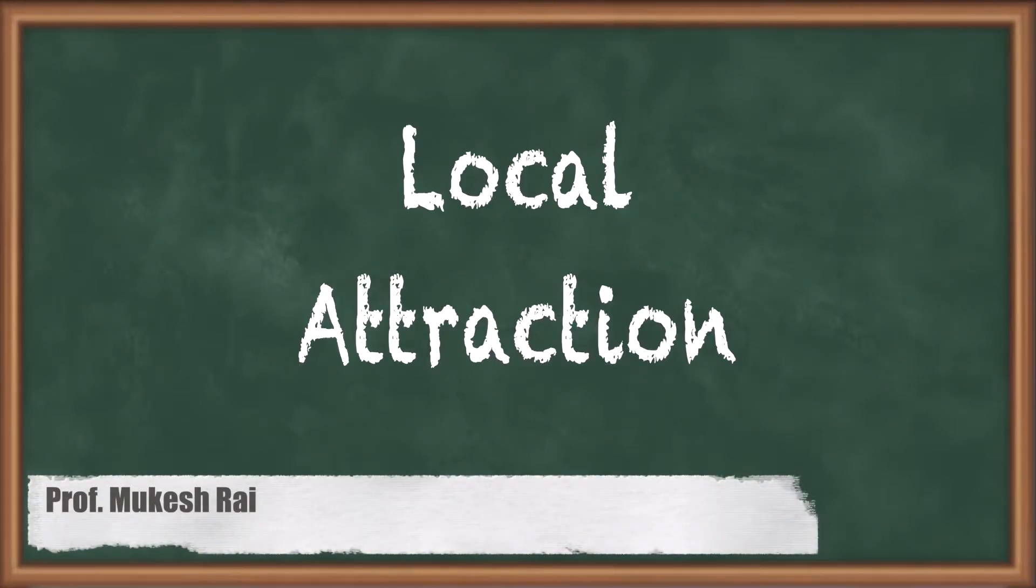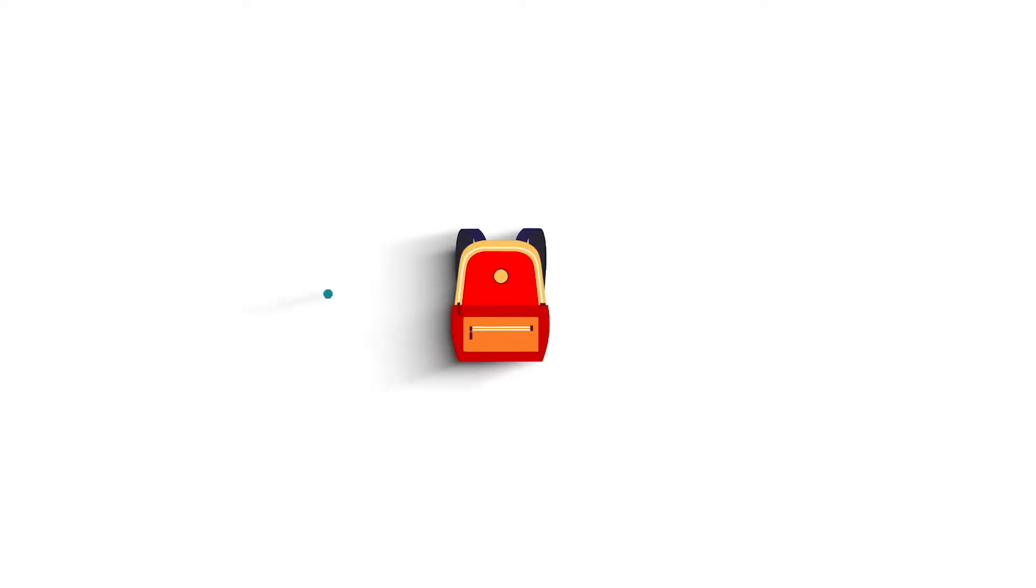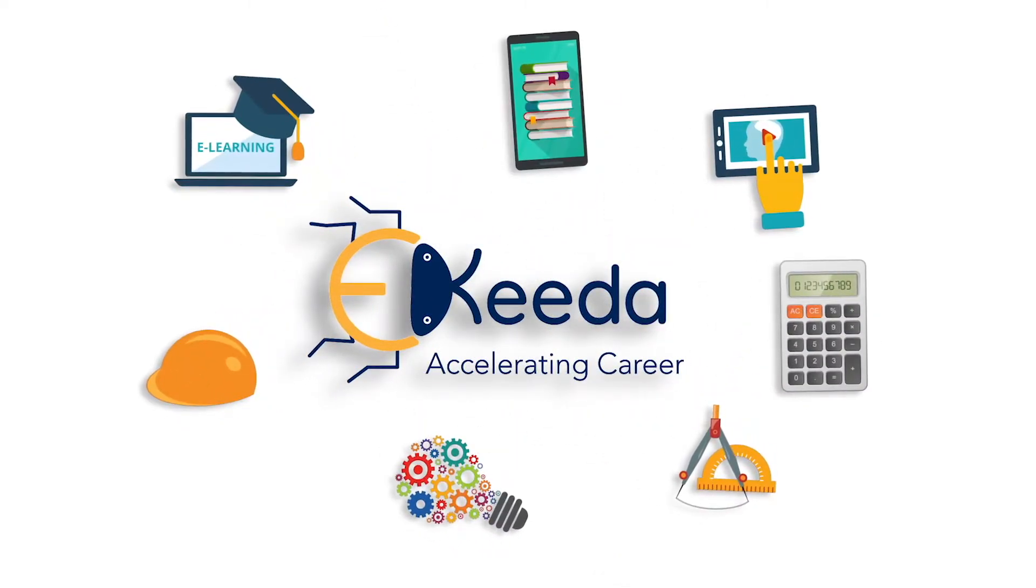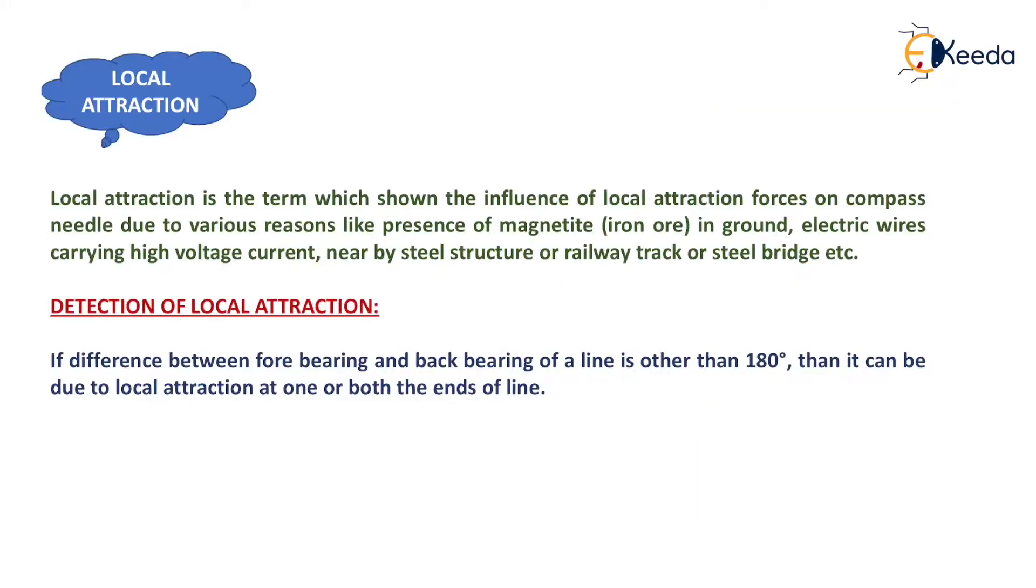Hello students, today we are going to study local attraction. Now what do you mean by local attraction? A magnetic meridian is established by a fully suspended compass like this. That is the magnetic meridian, that is magnetic north and magnetic south.